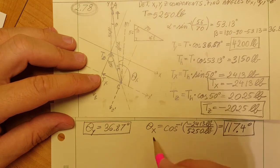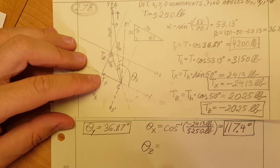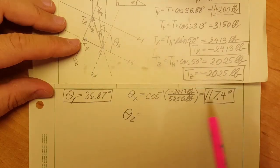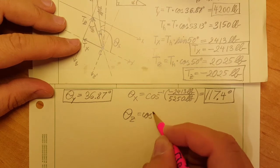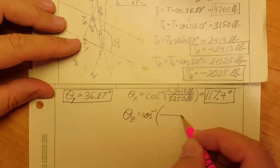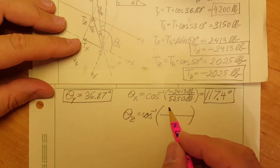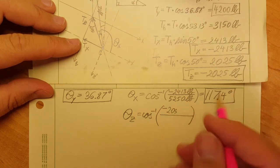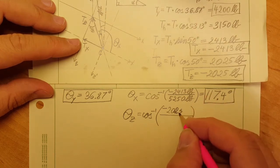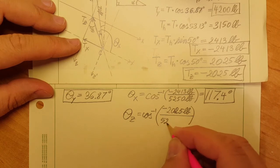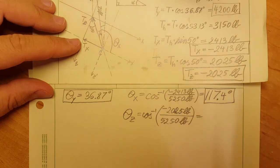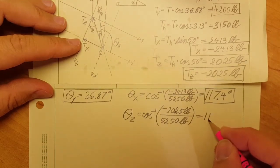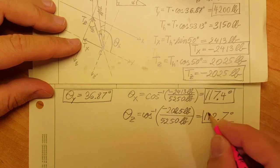Now let's do theta of z, our last angle. We're going to use the same process. Cosine inverse of the component of z, which is negative 2025 pounds, divided by 5250 pounds, and this gives us 112.7 degrees.